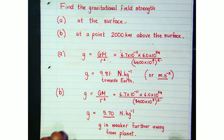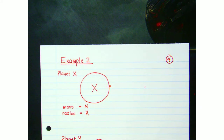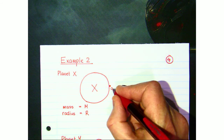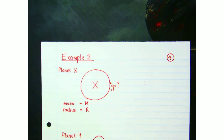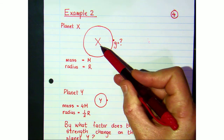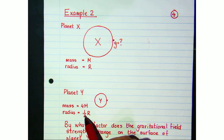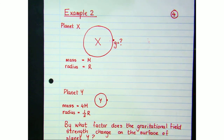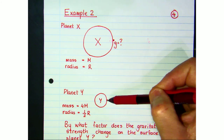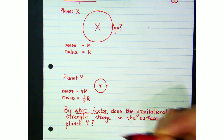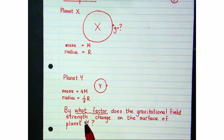In example 2 we're looking at planet X — picking a point on its surface and asking for the gravitational field strength there. We then go to planet Y, which has a mass 4 times planet X's mass and a radius half of planet X's radius. The question is: by what factor does the gravitational field strength change on the surface of planet Y compared to planet X? Pause the video and try the question.